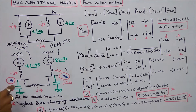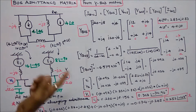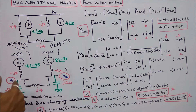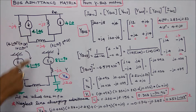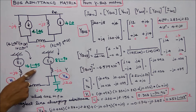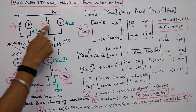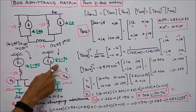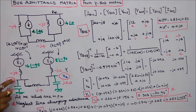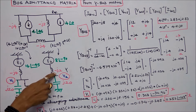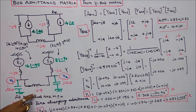Next, I convert into an equivalent voltage source. Four into four gives 16 angle minus 45 degrees. Two into four gives 8 angle minus 90 degrees. The inductances are minus J4, minus J2, and minus J4.